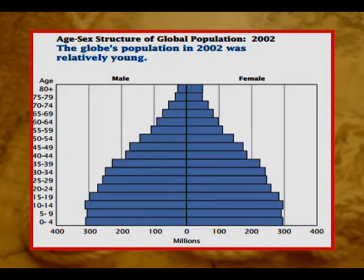An age-sex pyramid breaks down a country's population into male and female genders and age ranges. Usually, the left side graphs the male population and the right side displays the female population. Along the horizontal axis (x-axis), the graph displays population either as total population or percentage at that age. Along the vertical axis (y-axis), the age-sex pyramid displays five-year age increments from birth at the bottom to old age at the top.